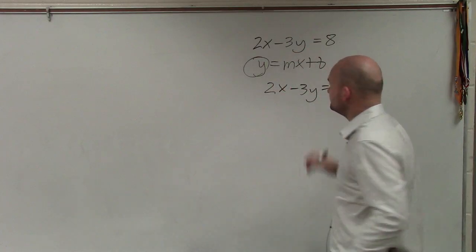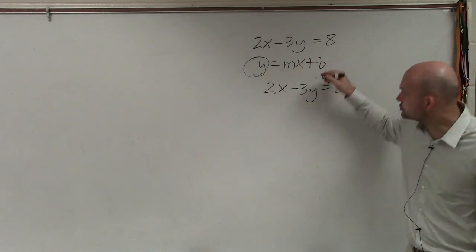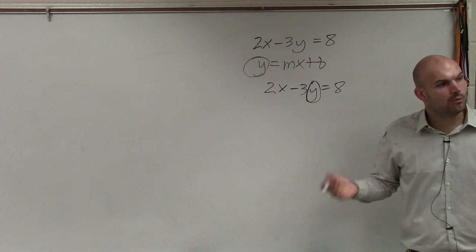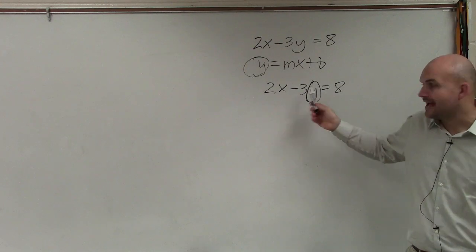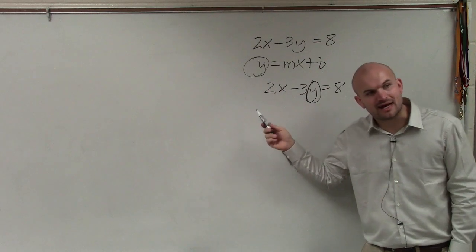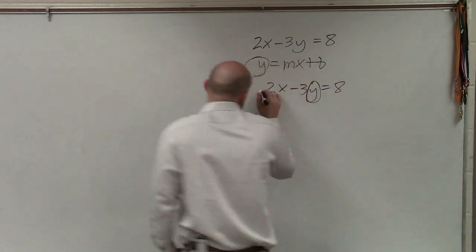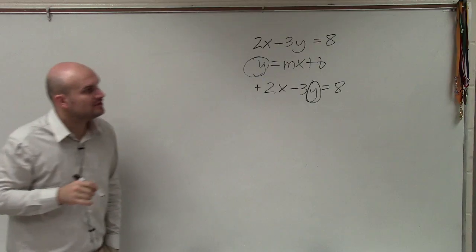So when you guys look at this problem, basically what you can see is circle the variable and say, all right, what is happening to my variable? You can see my variable is being multiplied by negative 3, and it's being added by 2x. Why do you say it's being added by 2x? Because that's a positive 2x.